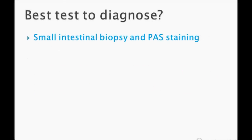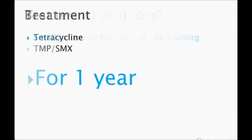The best test to diagnose Whipple's disease is a small intestinal biopsy with PAS staining — that's very important. Treatment is tetracycline or TMP-SMX for one year.